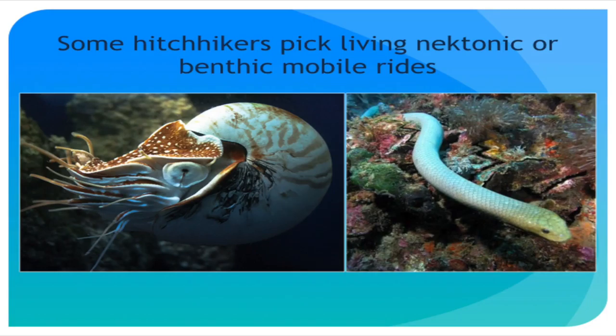There are still a few hitchhikers that like to settle on other animals. Nautilus shells have had many bryozoans reported from them. Sea snakes slough their scales but are pretty sluggish, so things settle and grow on them — the same thing can happen on sea turtle scutes.